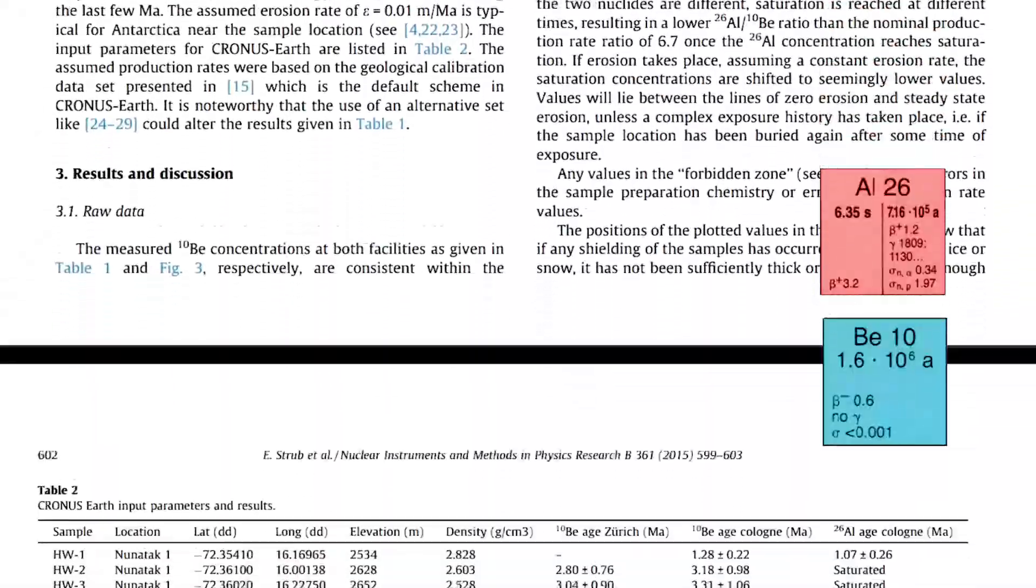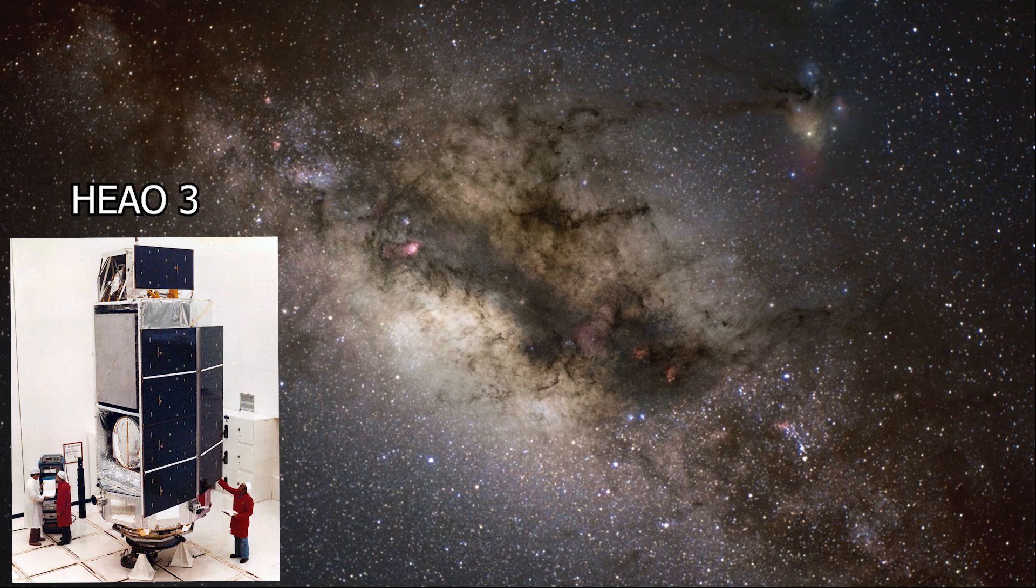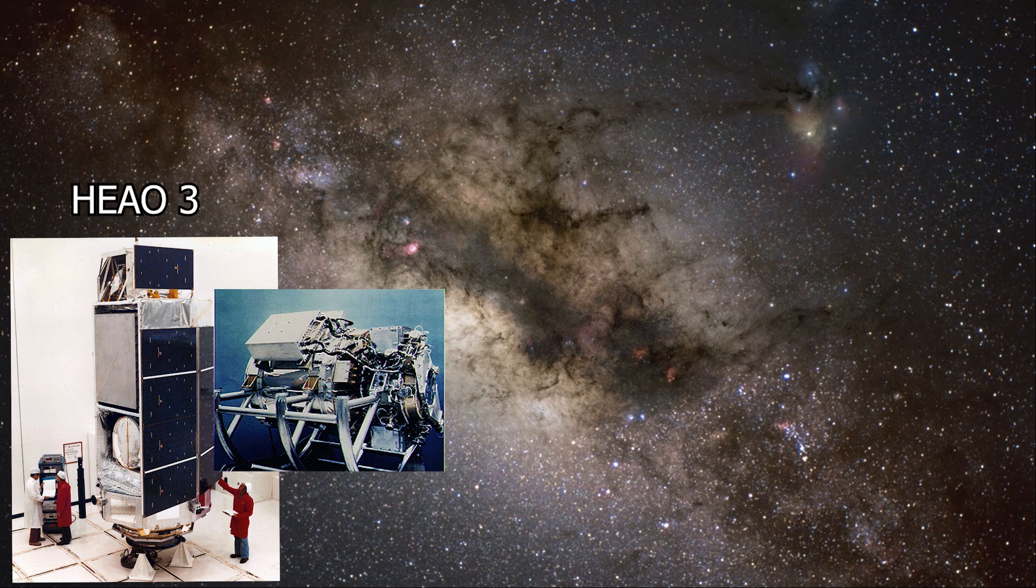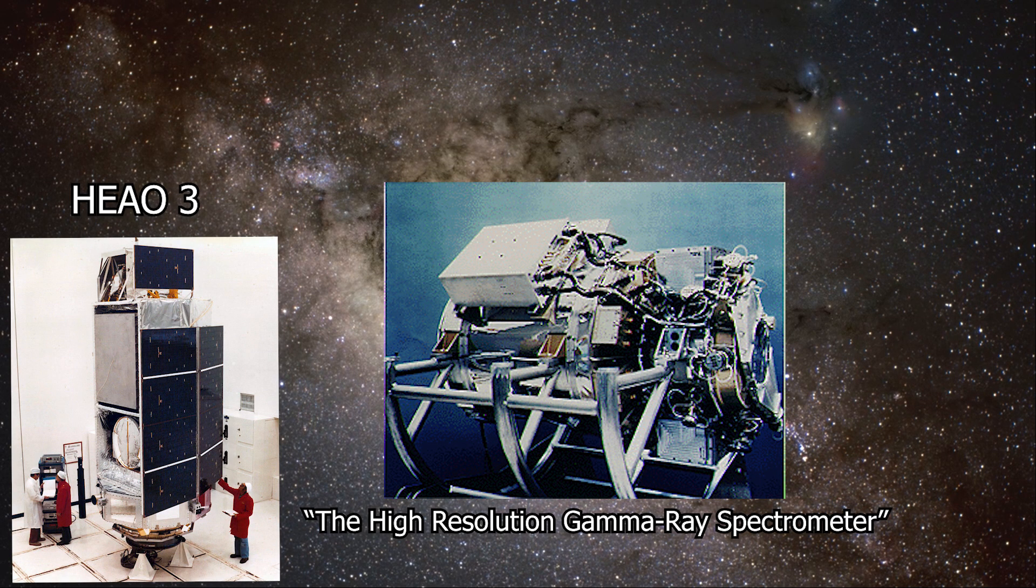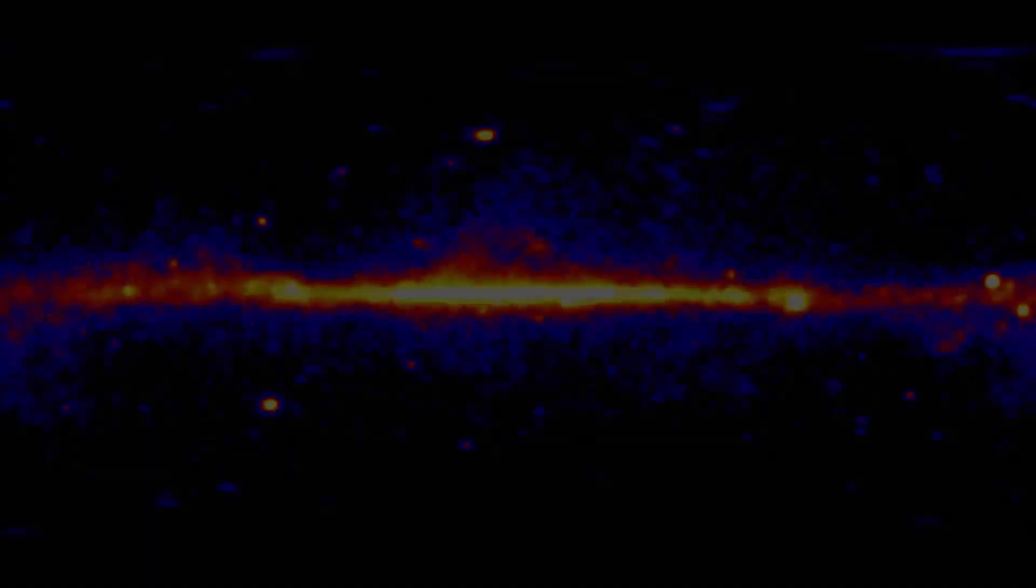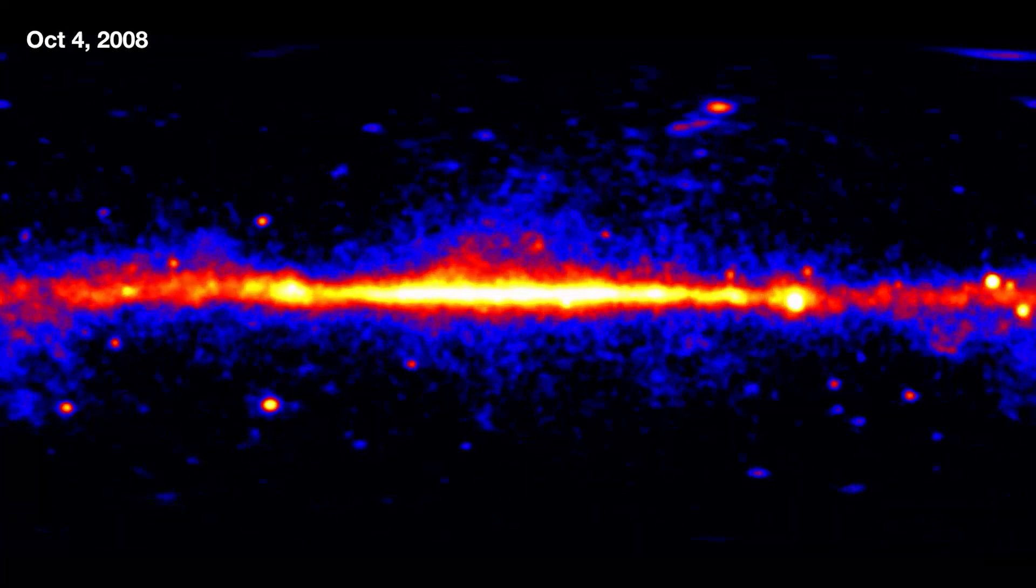But we have one problem. The amount of aluminium in these meteorites is tens of orders of magnitude away from what the HEAO-3 measured. The satellite was also the start of X-ray and gamma astronomy. The satellite was able to measure 1800 keV gamma activity, which was equivalent to the decay of three solar masses of pure aluminium-26 in the interstellar medium. Three suns of aluminium-26.